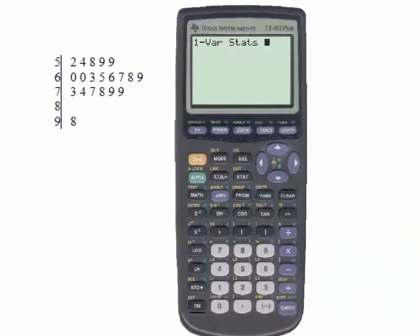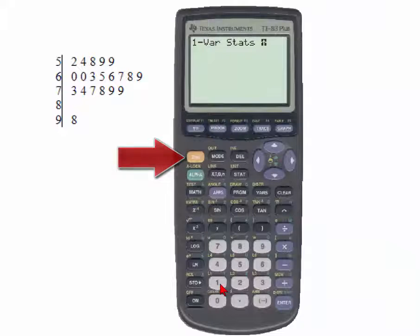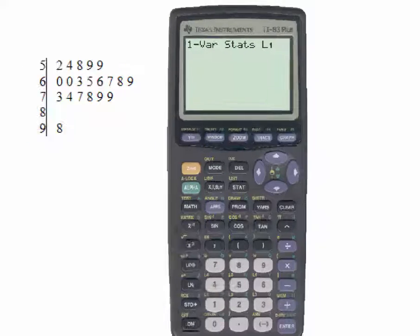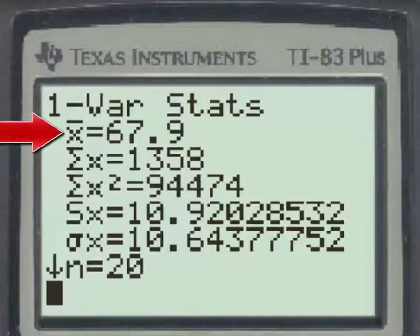Since our data is in list one, we'll use the yellow key and the number one to type L1. When we hit enter, we have the sample mean which is given as x̄ = 67.9.